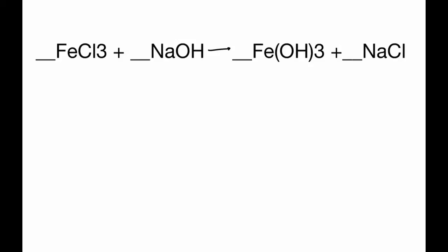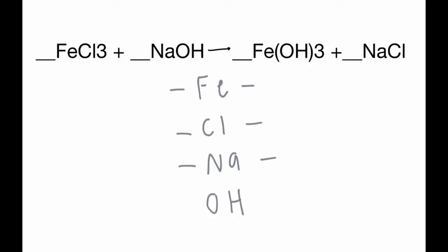We're going to do a few examples on how to balance double replacement reactions. We want to go through each element we have: Fe, Cl, Na, and OH. Then we want to figure out how many of each element we have on both sides of the equation.